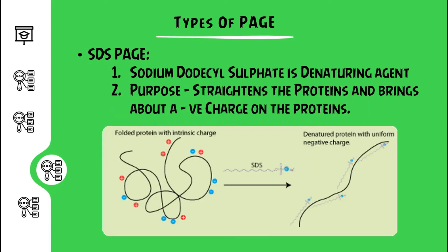SDS stands for sodium dodecyl sulfate, which is a denaturing agent. Its main purpose is to straighten and bring about a negative charge to the protein prior to the gel run. Proteins could be positively charged, negatively charged, or contain both charges based on the alkyl groups present in each amino acid. SDS unravels the proteins into their primary structure and brings about a negative charge throughout. The SDS is added to the gel during its preparation, the gel is run, and screening can be done, then examined in a gel doc.